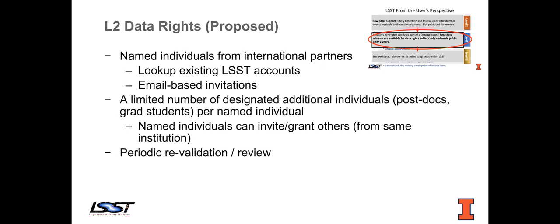In addition to US astronomers and Chilean astronomers, we also have to handle named individuals. People who have accounts will be allowed a limited number of designated additional individuals — most likely a professor who gets access to the identity and then provides access to his or her postdocs, grad students, et cetera. They could potentially invite others from the same institution as well. An important part of all this is a periodic revalidation and review of these accounts — especially with students who graduate and may go to another institution. We want to make sure we're constantly removing or disabling stale accounts, which is a big part of protecting LSST data.